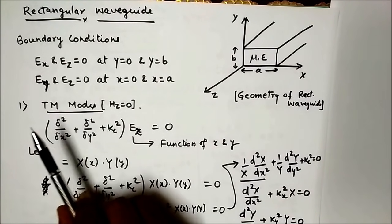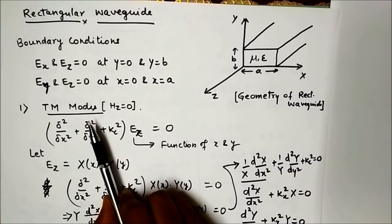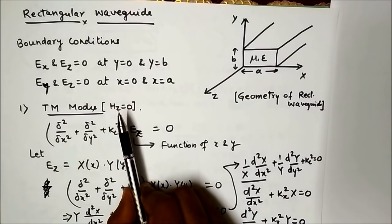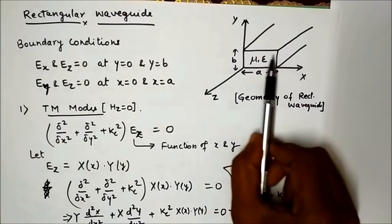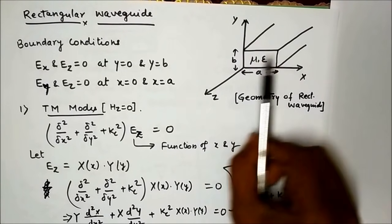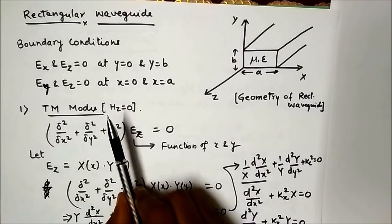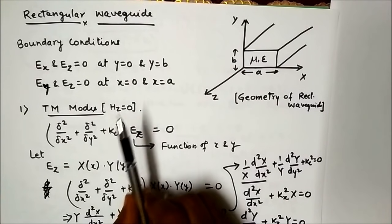First, we consider the TEM mode. In a rectangular waveguide, TEM mode does not exist. The reason is there is only one conductor, and TEM mode requires at least two conductors to propagate.